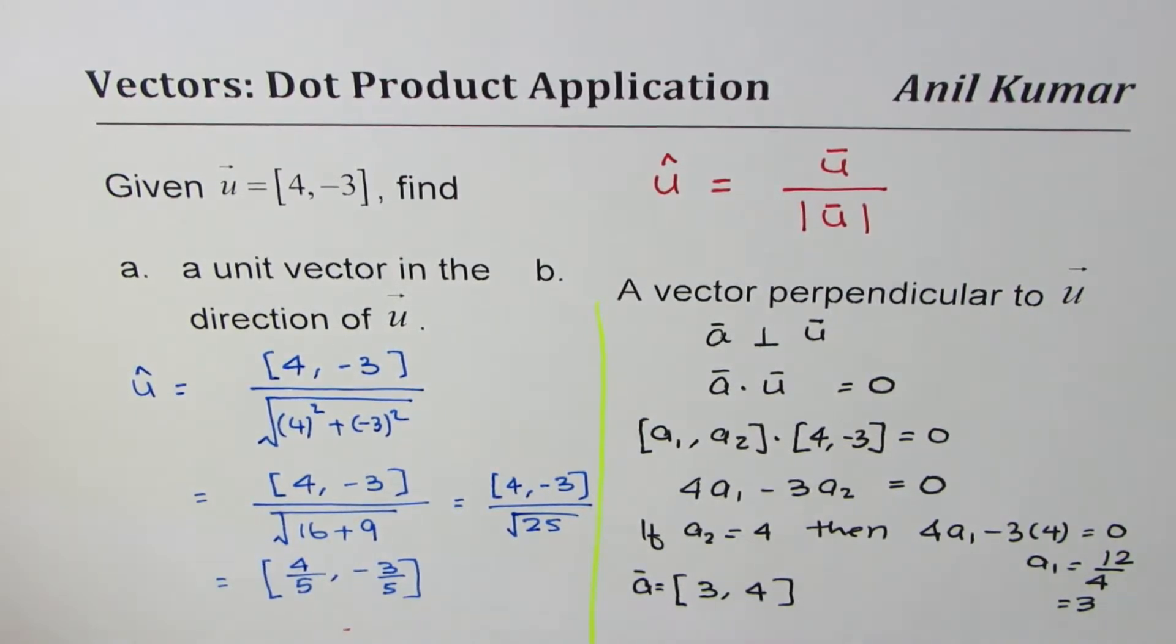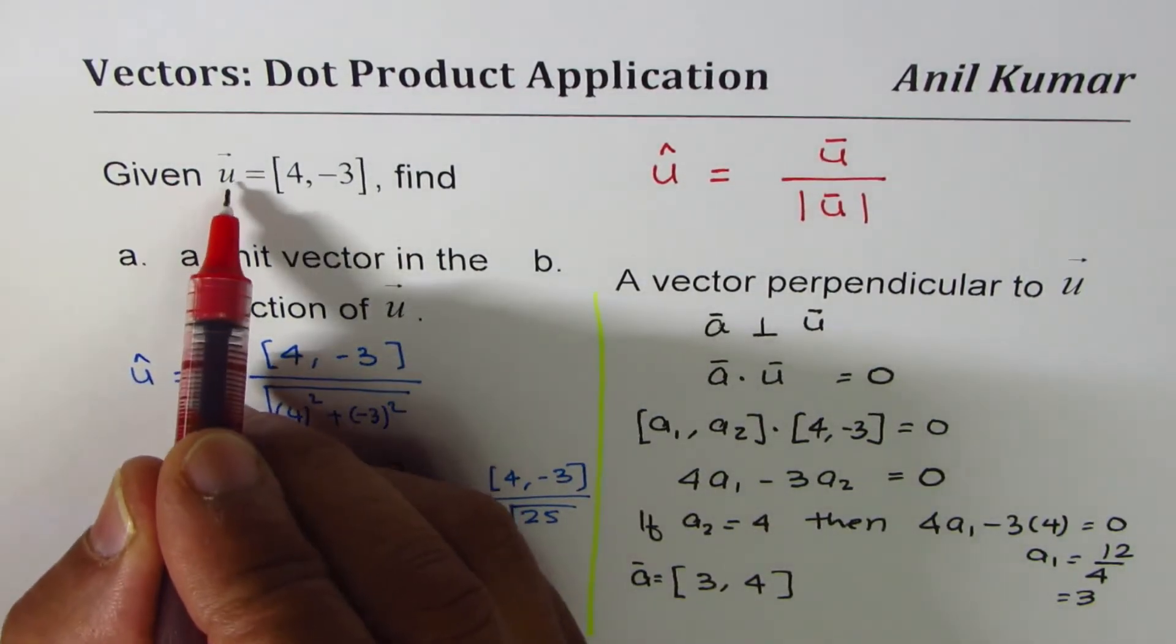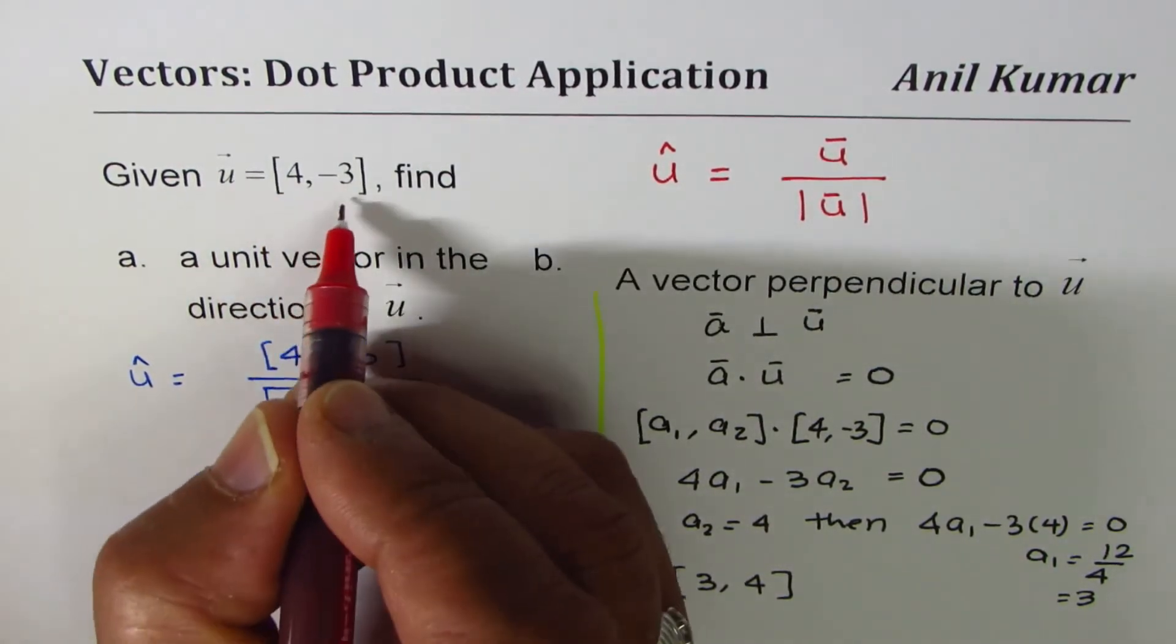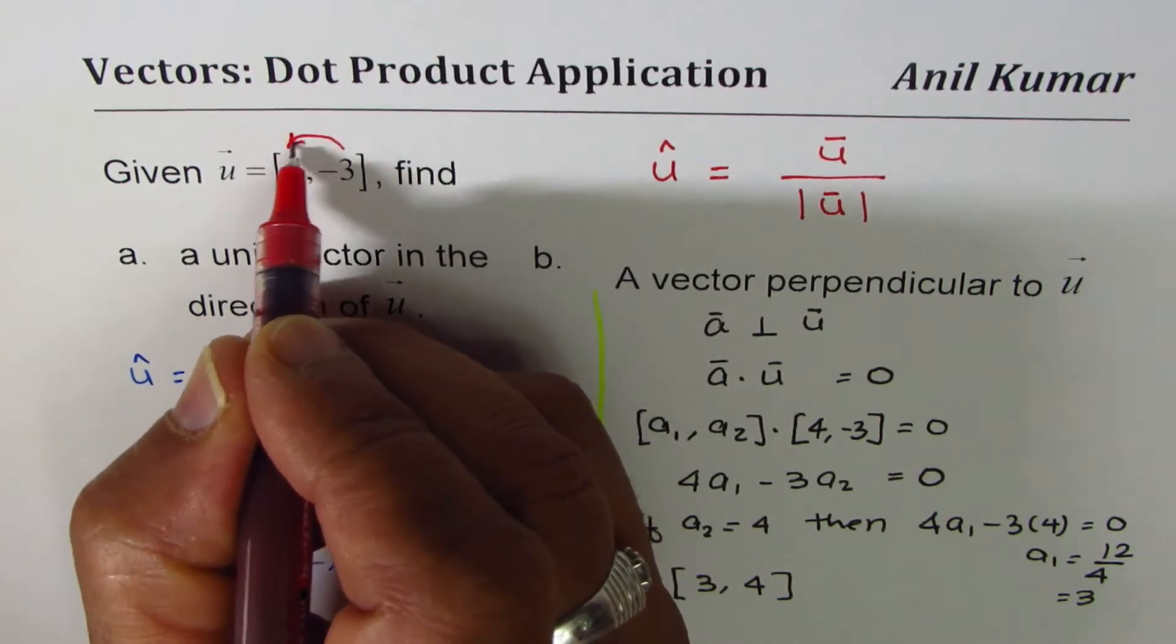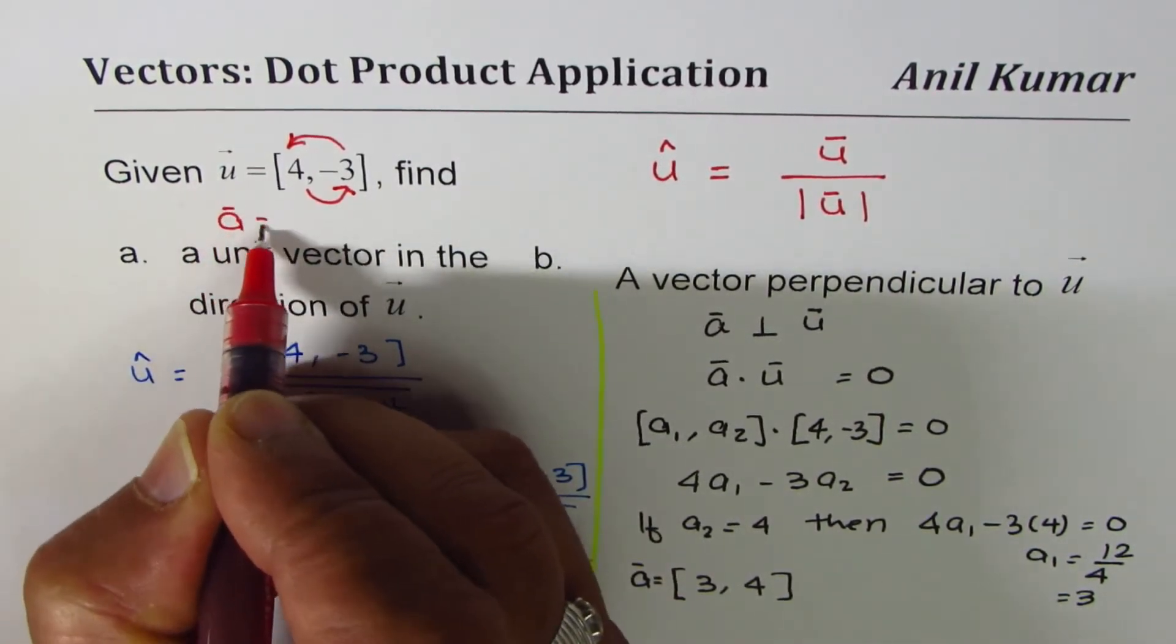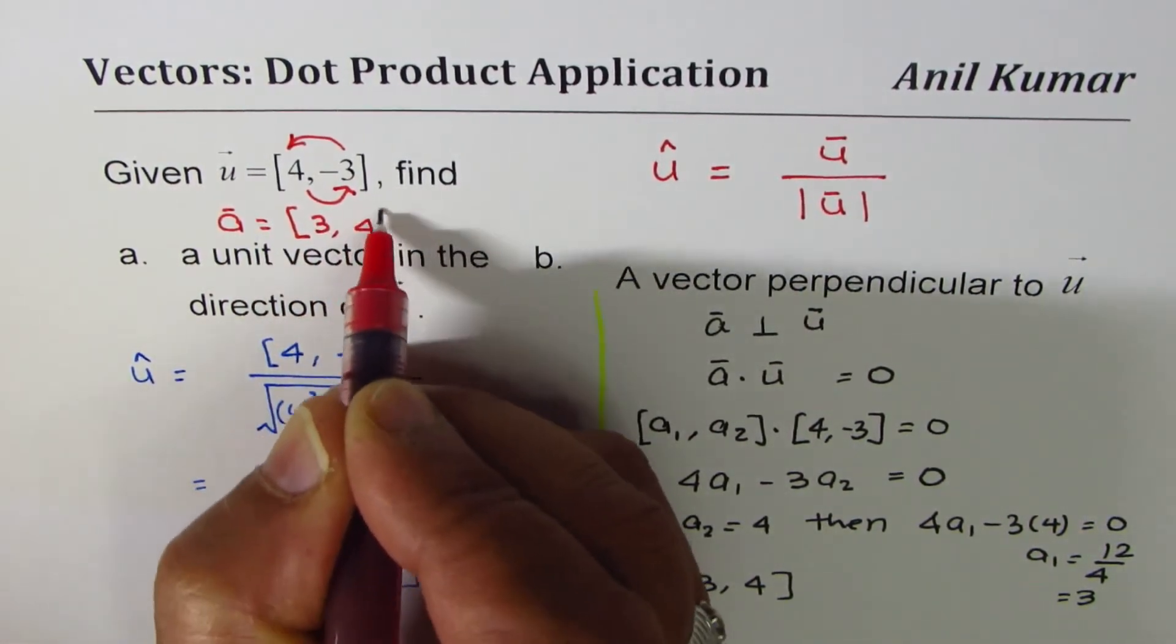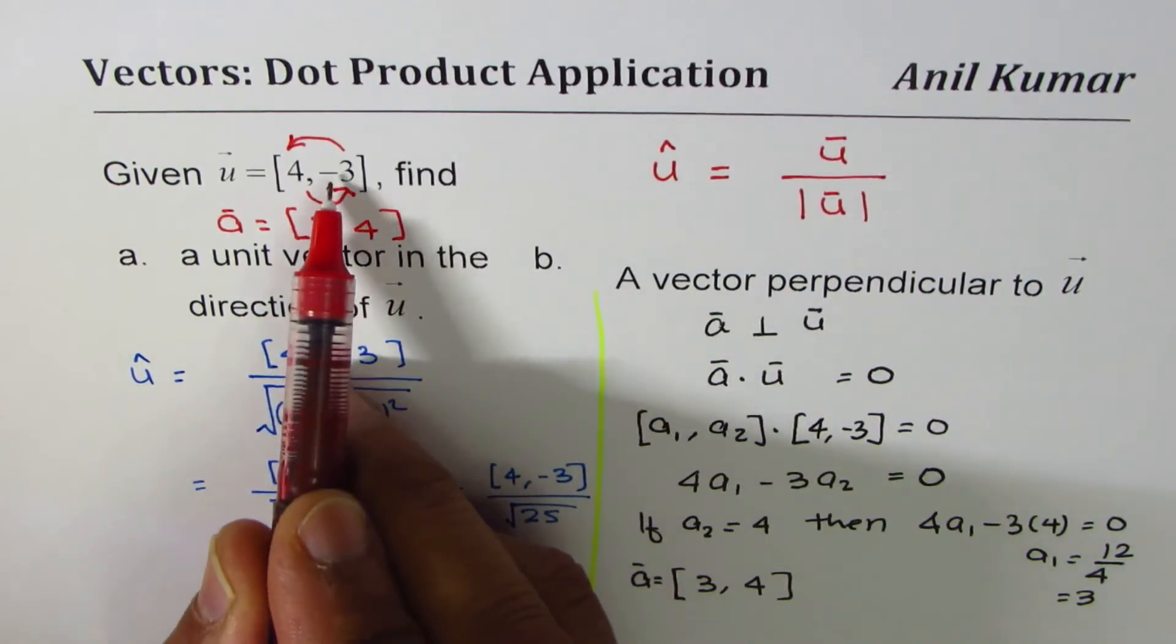In R², you will observe that if u is [4, -3], we kind of swap. So we're getting the vector a as [3, 4].